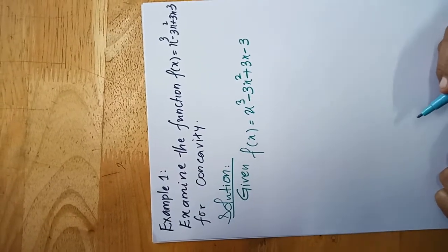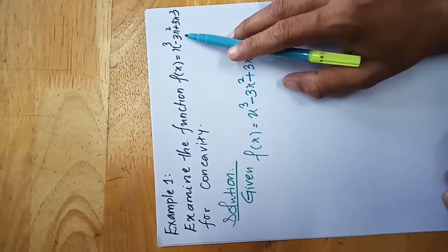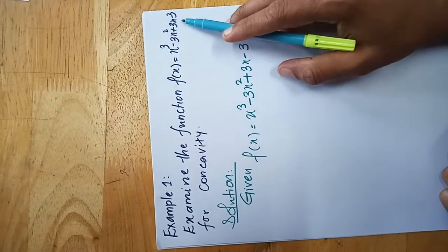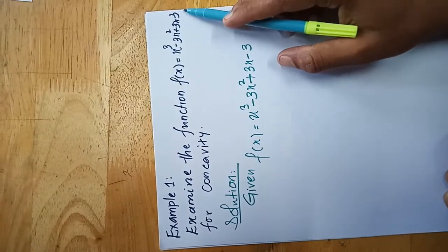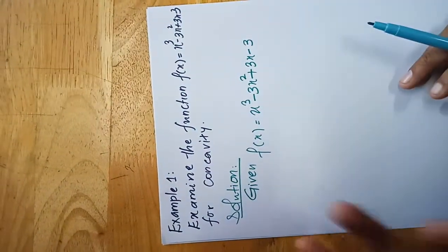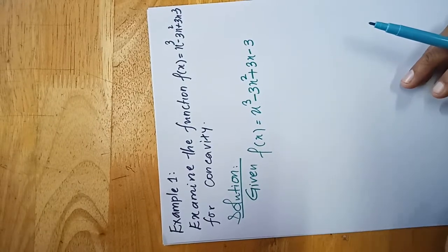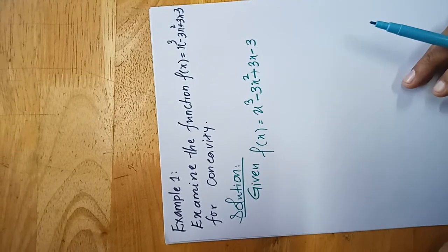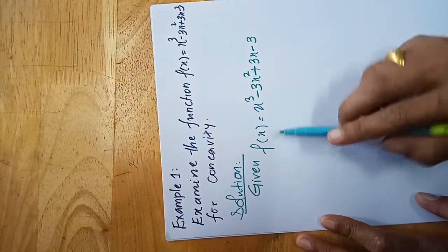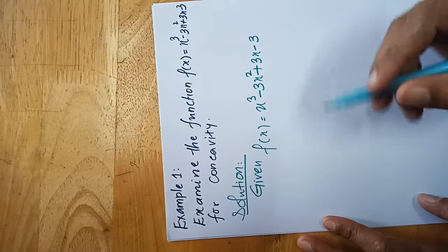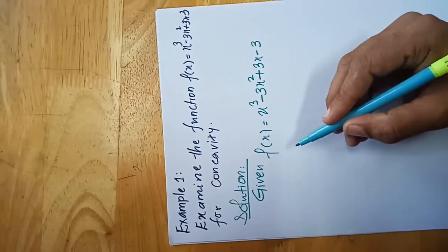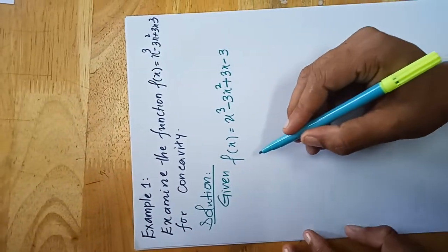Let's examine the function f(x) = x³ − 3x² + 3x − 3 for concavity. We need to check whether the function is concave up or concave down.